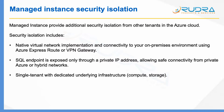Managed Instance provides additional security isolation from other tenants in the cloud. This security isolation includes a native virtual network implementation and connectivity to your on-premises environment using either ExpressRoute or VPN Gateway. You can use either of them to connect your existing on-premises network with the virtual network created with Managed Instance, connecting to the database privately over a private network. Additionally, the SQL endpoint is exposed only through a private address, allowing safe connectivity from private Azure or hybrid networks — there is no public endpoint for clients to connect, only through a private IP address.